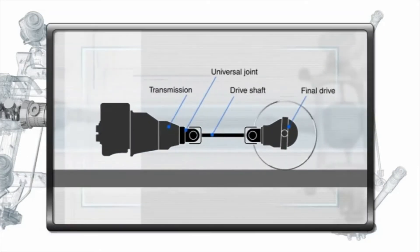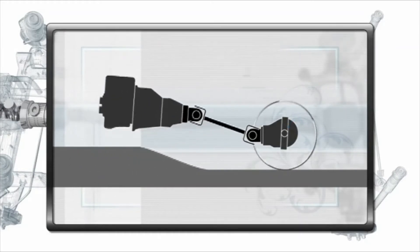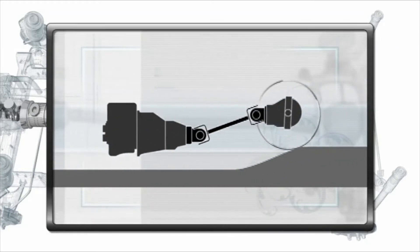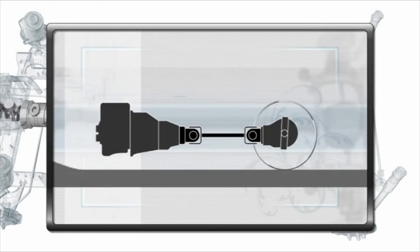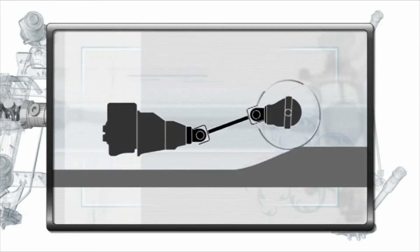The suspension absorbs the vertical shock from uneven roads by moving accordingly with the wheels. Because the final drive also moves in tandem with the suspension, the relationship between the transmission and the final drive changes with movement.